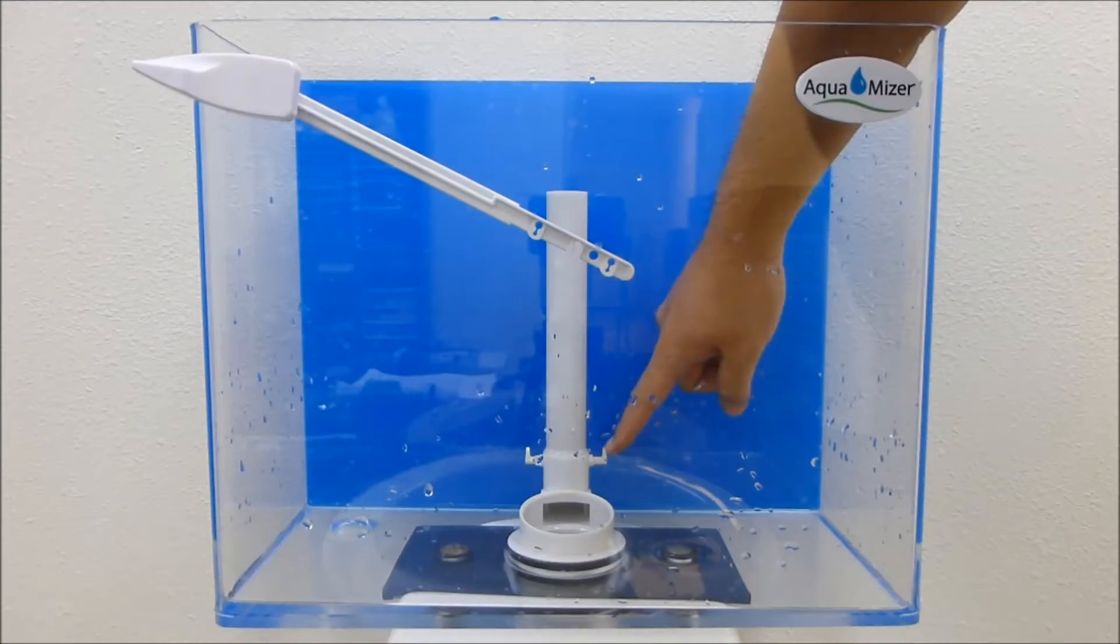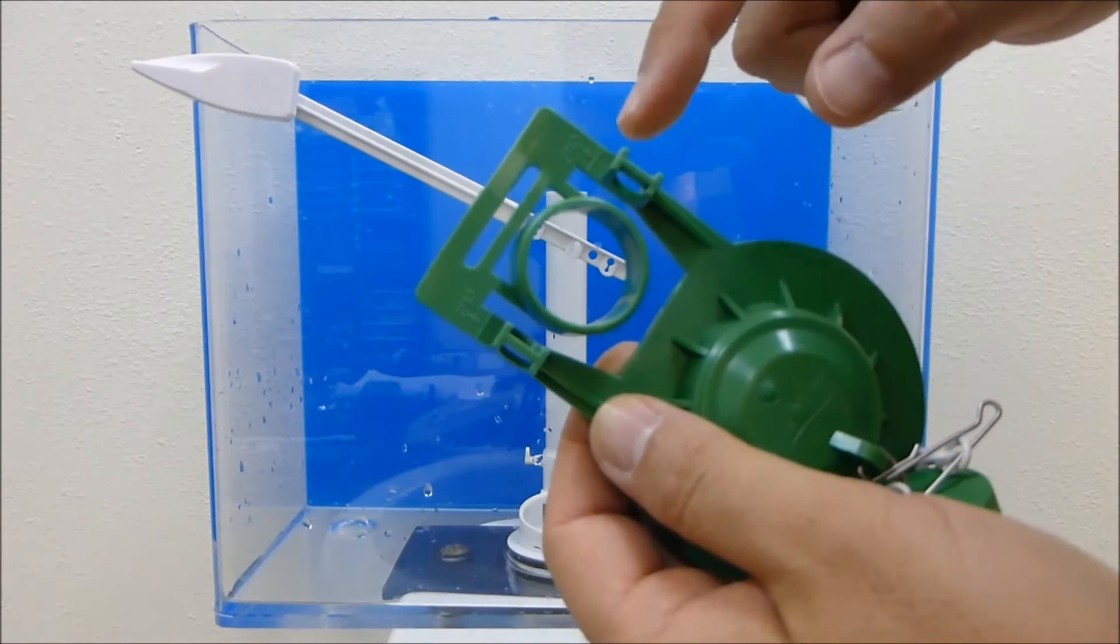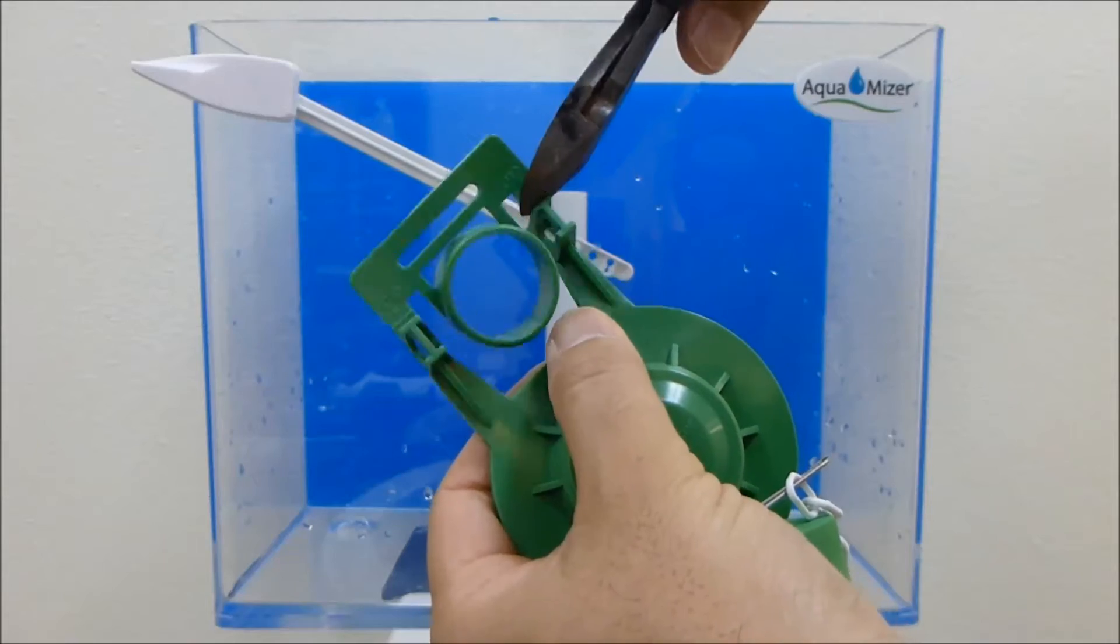If the flush valve has flapper mounting prongs, cut off the circular collar on the back side of the flapper. You will see cut off lines behind the flapper arms.